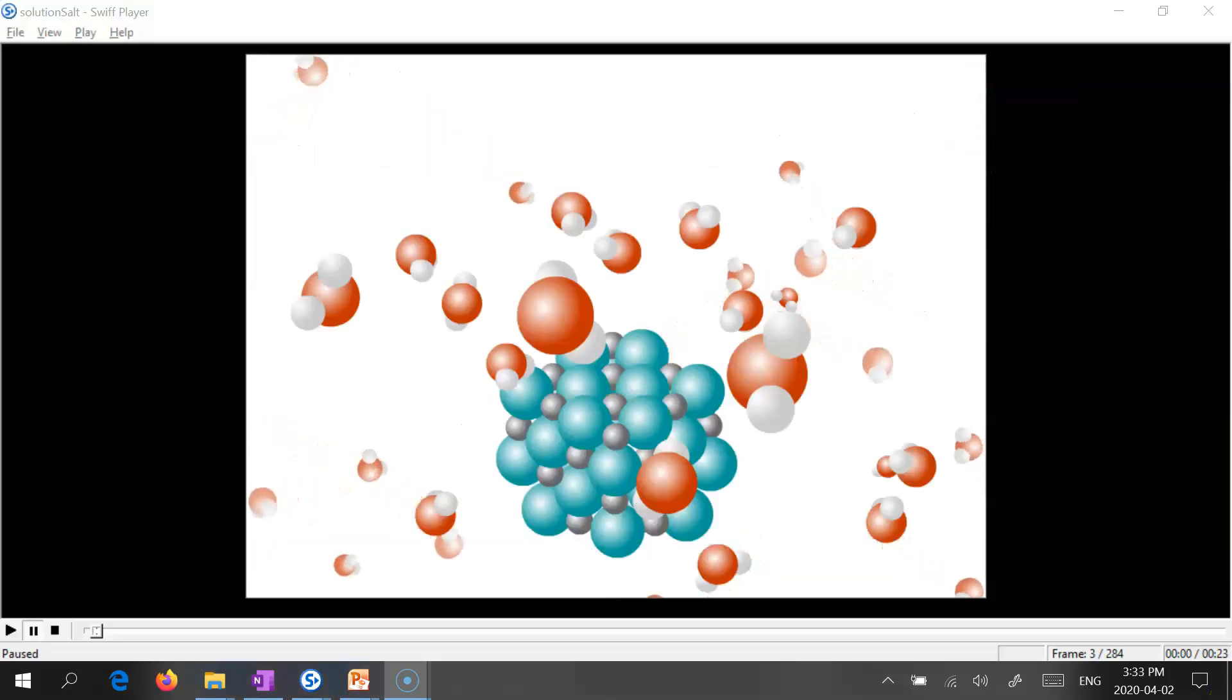Before we move ahead, let's briefly review the process of dissolving at the molecular level. In this animation, we have an example of an ionic compound. Let's pretend it's table salt, where you have a repeating pattern of negative and positive ions.